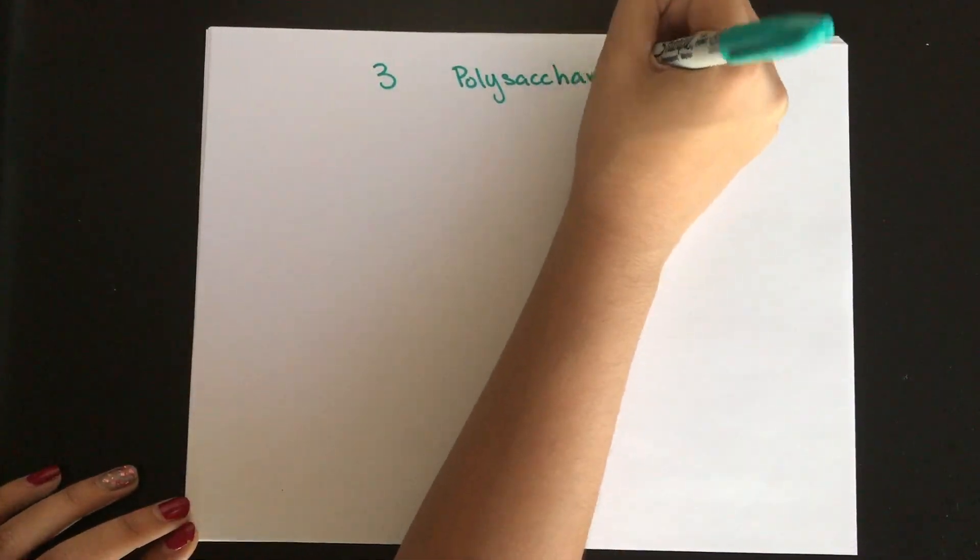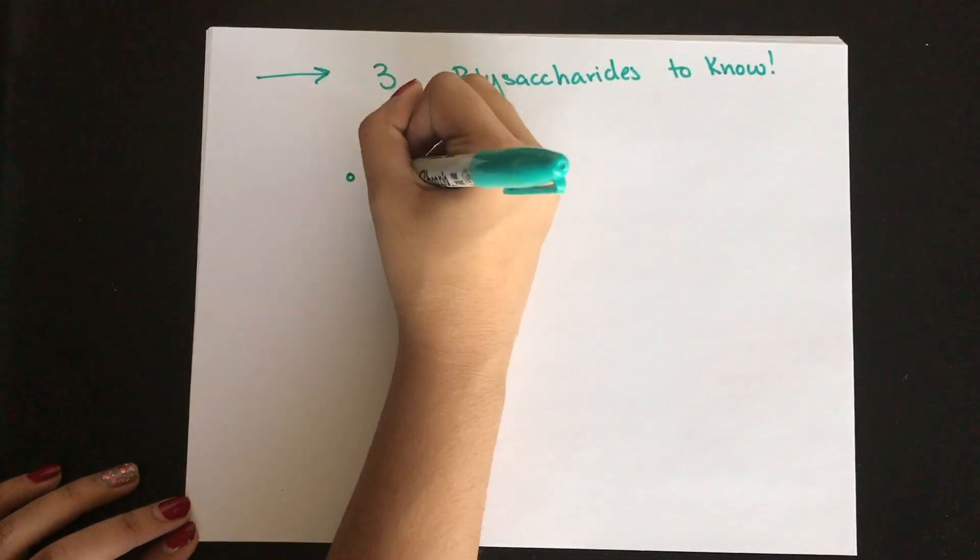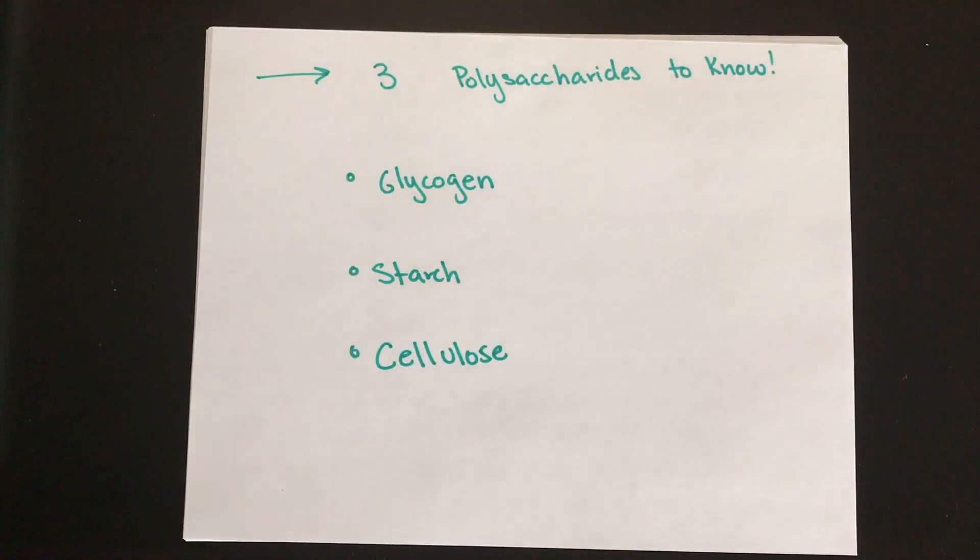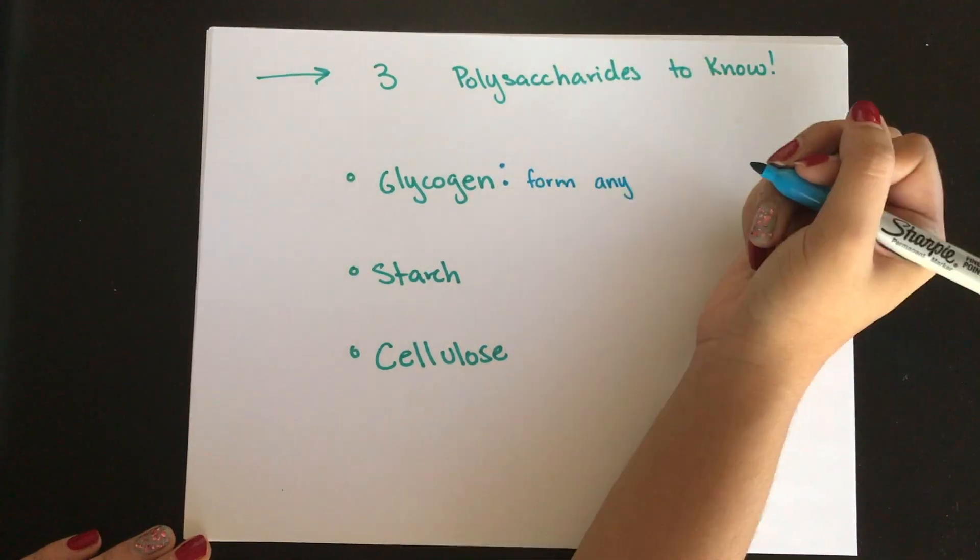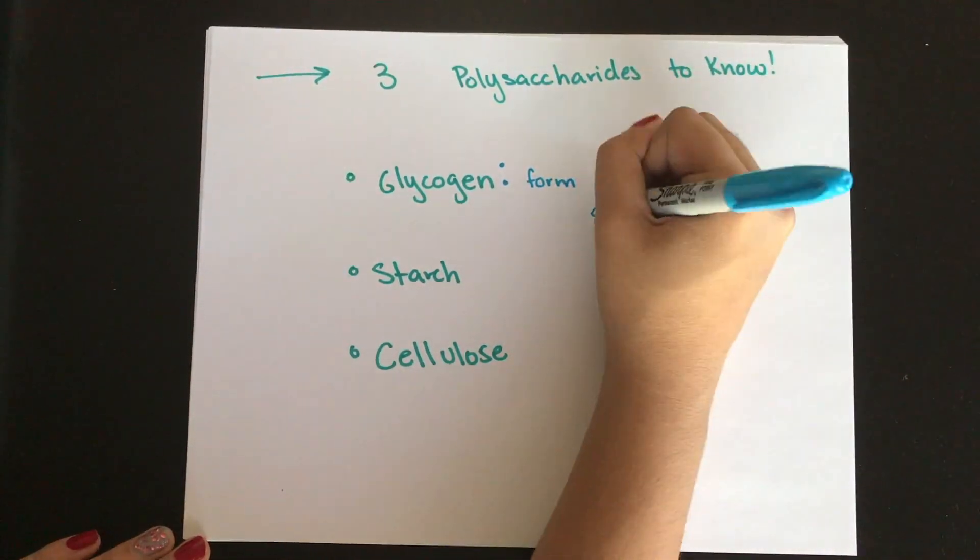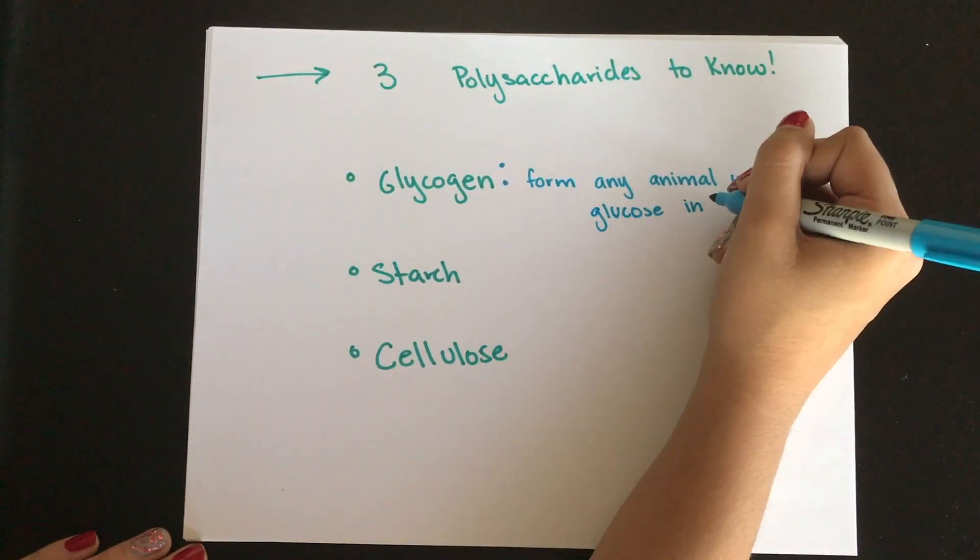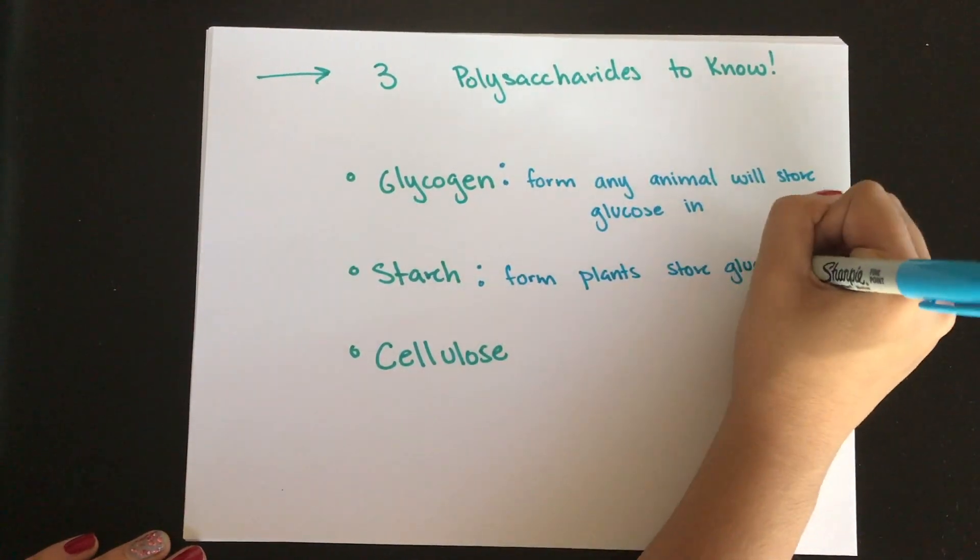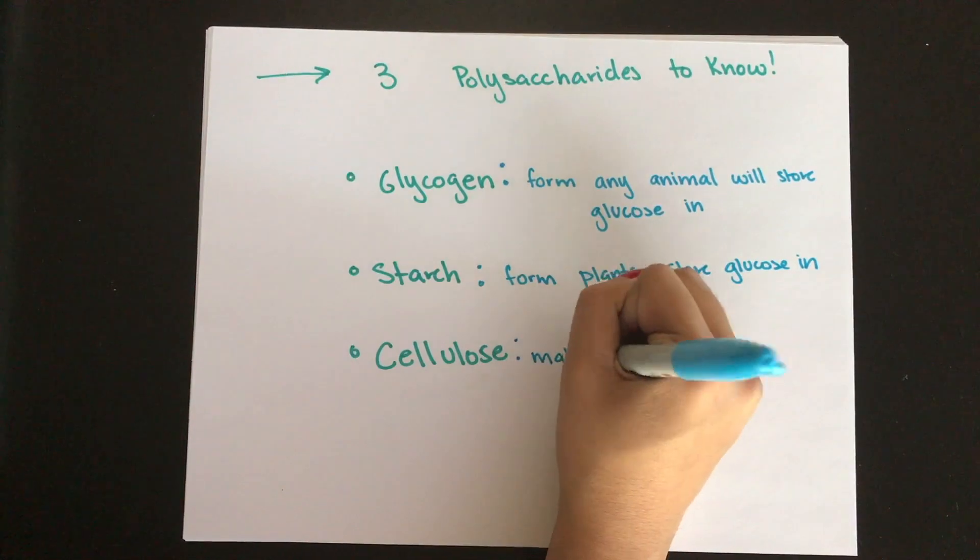More than two monosaccharides linked together is called a polysaccharide. The three polysaccharides to remember are glycogen, starch, and cellulose. All are polymers of glucose, but they differ in the way that the glucose molecules are linked together. Each of their functions are also important to know. Glycogen is the form that animal cells store glucose in. Starch is the form that plants store glucose in. And cellulose is a structural polysaccharide that makes up cell walls.